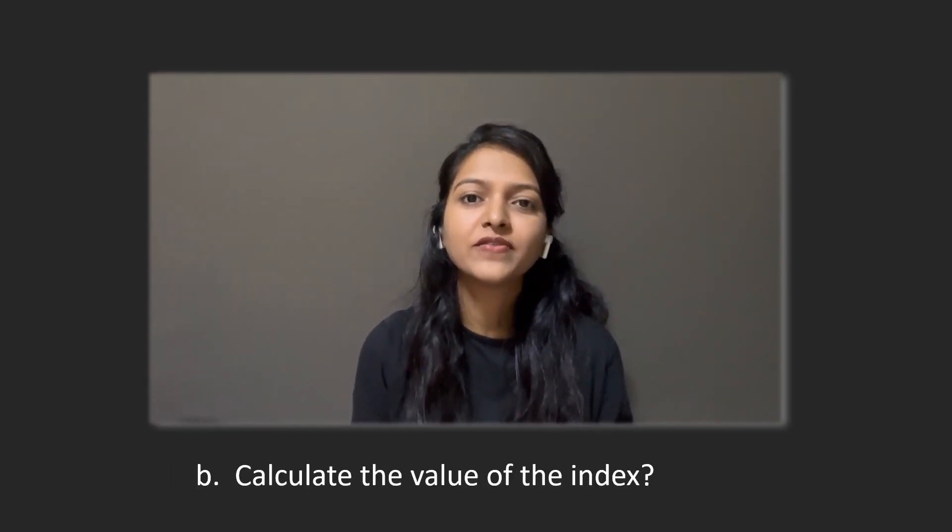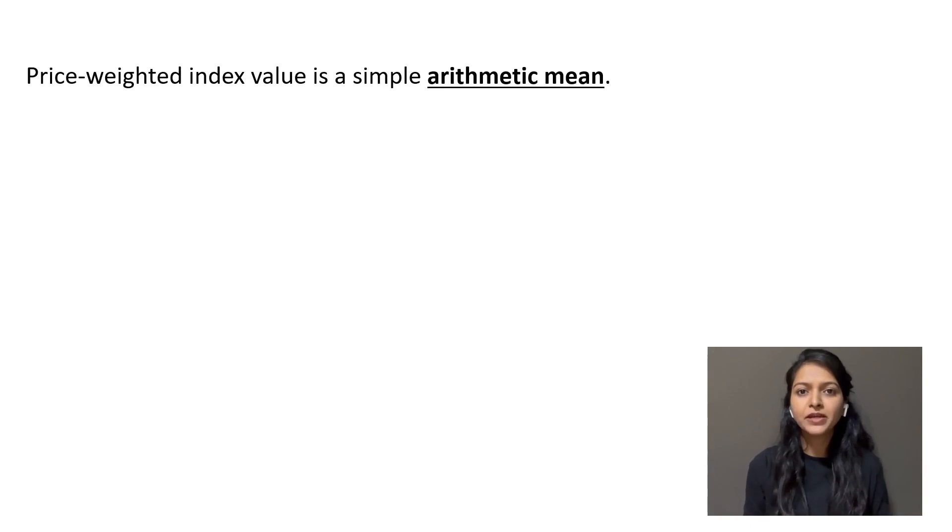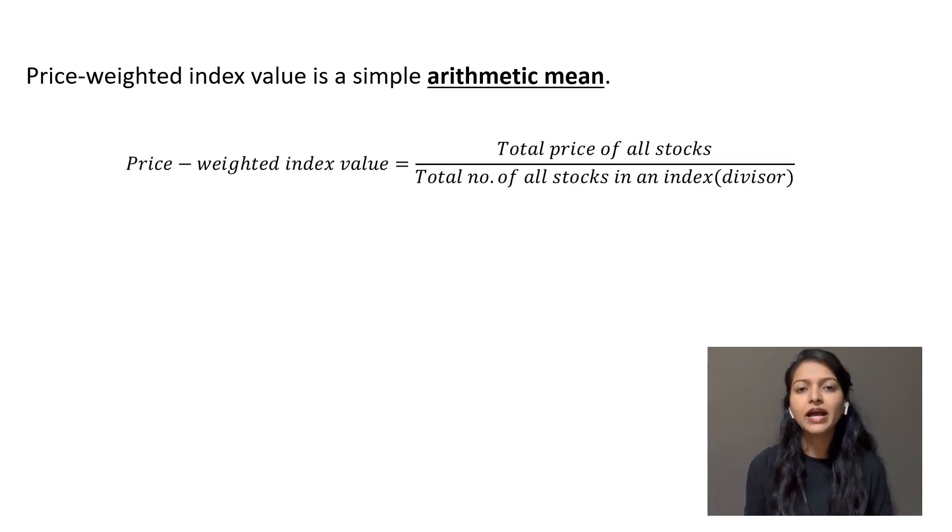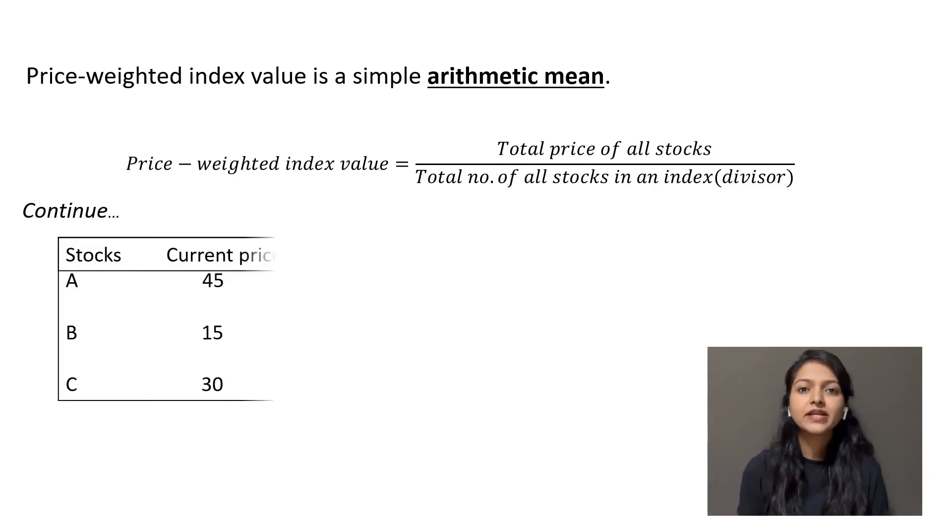After understanding this weighting pattern, now we will move to calculate the value of the index. It is a very simple arithmetic mean. We need to add the prices of all the stocks and divide by the total number of stocks in the index. Continuing with the previous example, price-weighted index value equals 30.